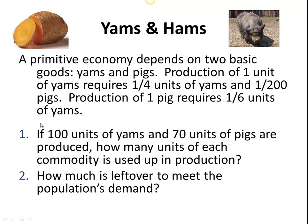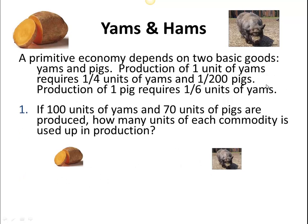The question we want to explore here is: if we have a production level of 100 units of yams and 70 units of pigs, how much yams and pigs do we use up in this production? Remember, we're using up a little bit of each thing in order to produce it. So let's take a look at that.